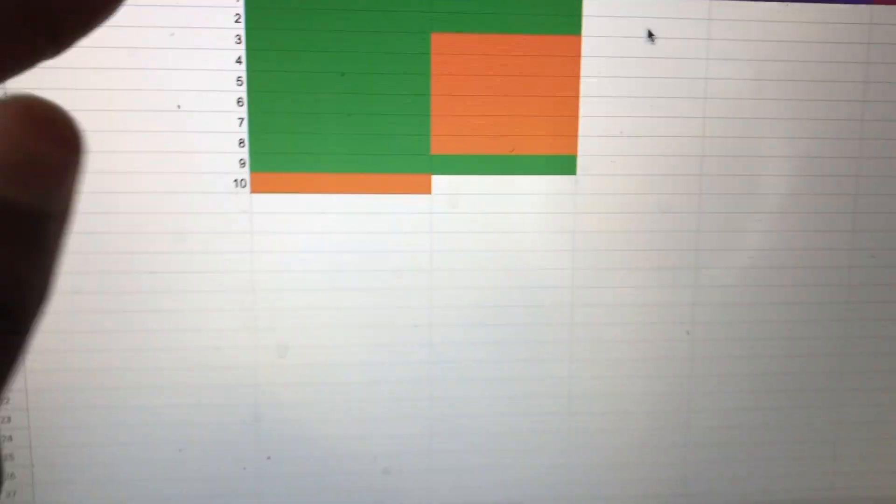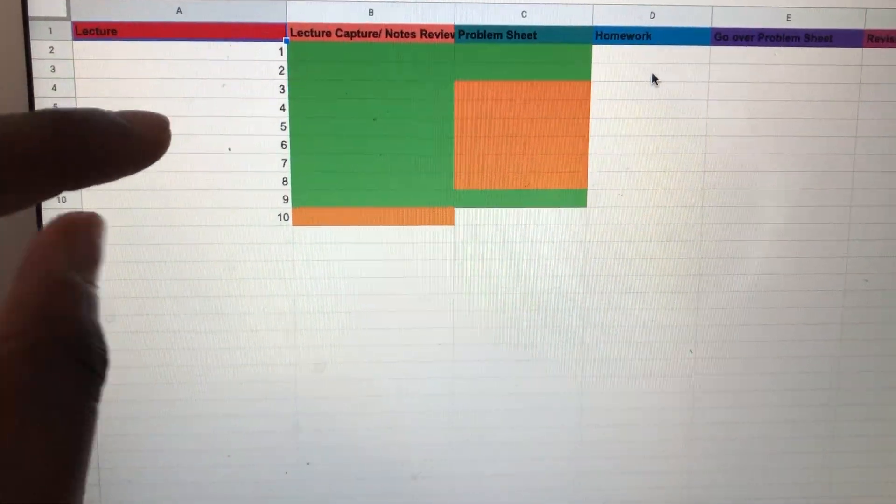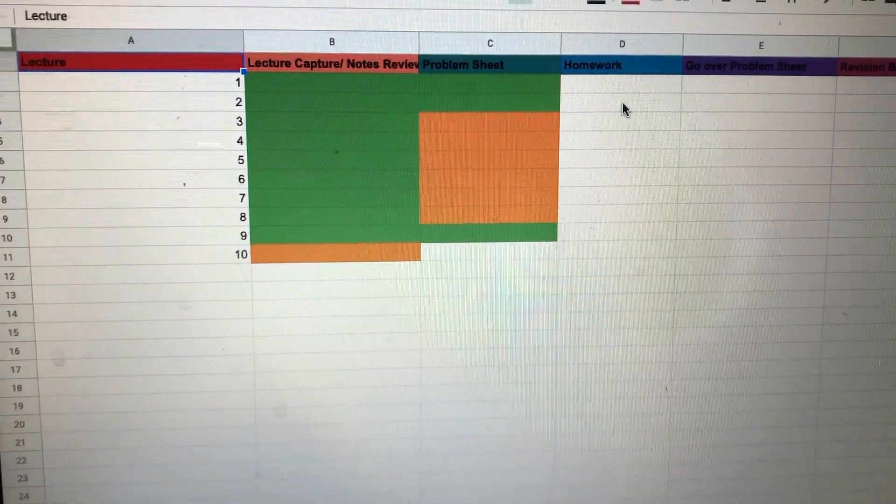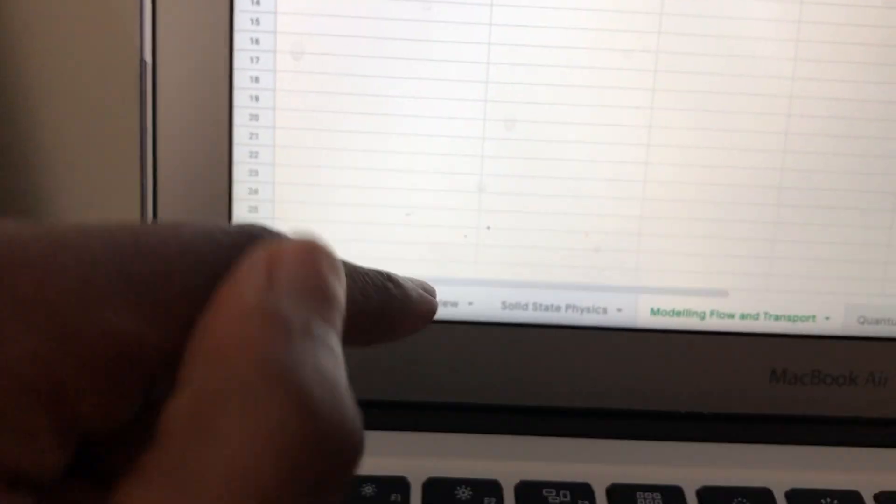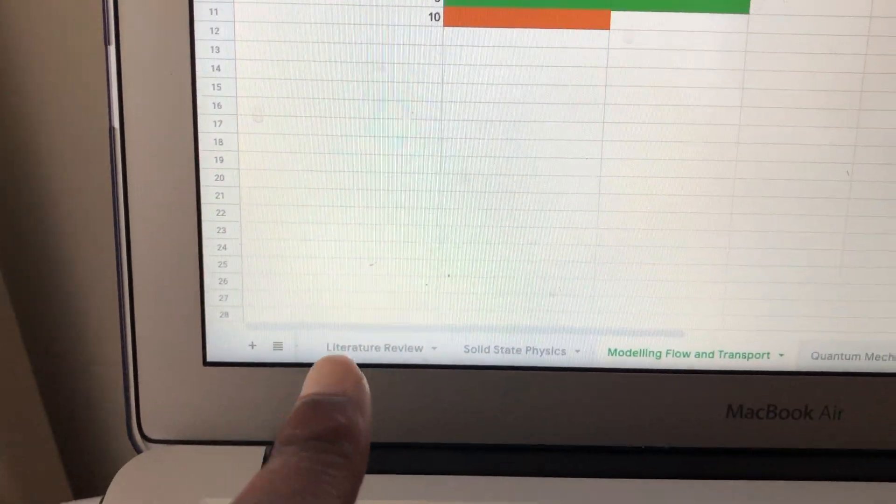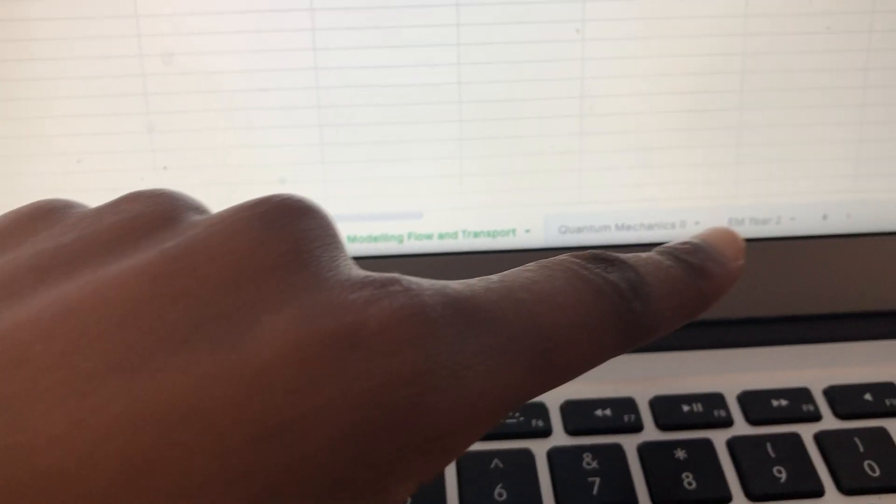There are 10 weeks per semester, so 10 weeks of lectures for each module. I have it for all of the modules that I need to go over or revise. For this one, it's from last year but I need to revise it for one of my other modules.